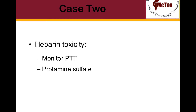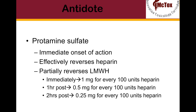In heparin toxicity, risk of bleeding is measured by the PTT. Protamine sulfate can be administered as an antidote, as it reverses the effects of heparin. Protamine sulfate has an immediate onset of action once given intravenously. Although it effectively reverses heparin, it only partially reverses the low molecular weight heparins. The dose depends on the heparin dose administered and the time lapse post-administration: 1 mg for each 100 units of heparin received immediately, 0.5 mg for every 100 units within an hour, and 0.25 mg for every 100 units after 2 hours. There is a risk of anaphylactoid reaction with rapid infusion of protamine; if this happens, it should be treated with H1 and H2 blockers and epinephrine as needed. This can be prevented by slower infusion rates.